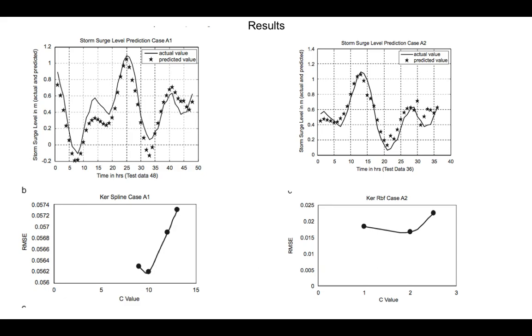We see in the first case where the kernel transformation function has been chosen to be spline, the RMSE goes down to 0.05 for a value of c which equals 10, while in case of the RBF based kernel transformation the RMSE value goes down to about 0.015 for a c value of 2.